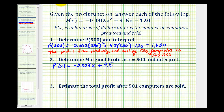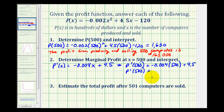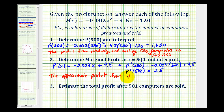Now we need to evaluate this at x equals 500. I've already determined this value — it is equal to 2.5. But again, this is in hundreds of dollars. The marginal profit tells us the approximate change in profit from selling the x plus 1th item, or in this case the 501st item. So from this, we can conclude that the approximate profit from the 501st computer is 2.5 times 100, or $250.